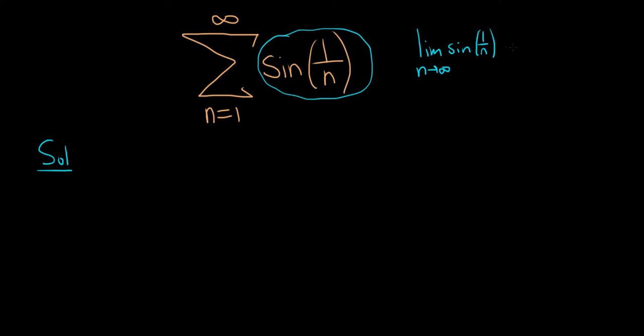As n goes to infinity, 1 over n approaches zero. So this is just the sine of zero, which is equal to zero. So no good. The nth term test fails.